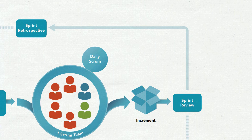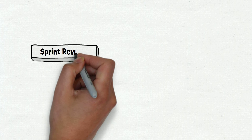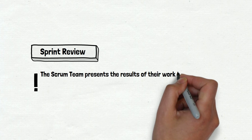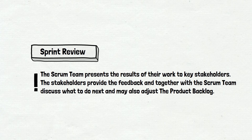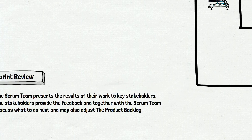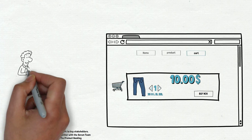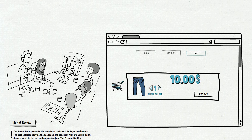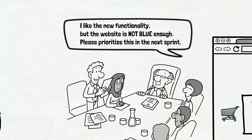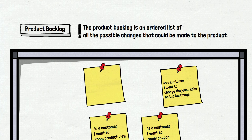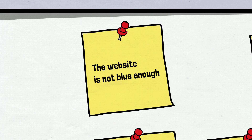There are two more items on the schema — both of them are meetings. The first one is sprint review. The Scrum team presents the results of their work to key stakeholders. The stakeholders provide feedback and, together with the Scrum team, discuss what to do and may also adjust the product backlog. The dev team finished the increment and demonstrated it to the stakeholders. They can change priorities for the next sprint or have new ideas related to functionality or UI. The product owner will update the product backlog based on what was discussed at the sprint review meeting. In our case, we have a new highest priority story.